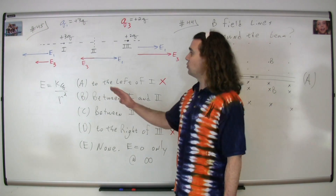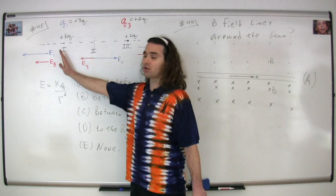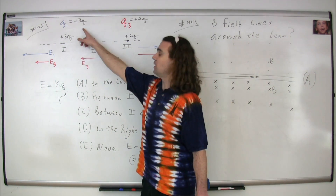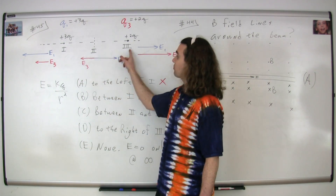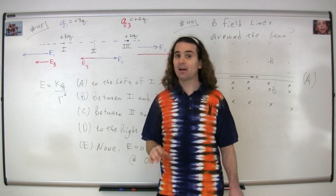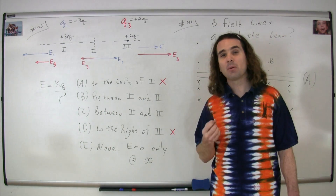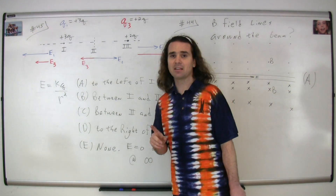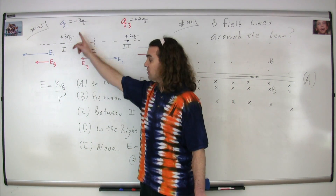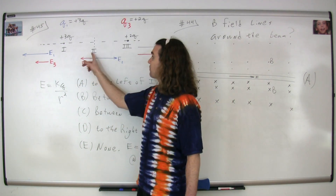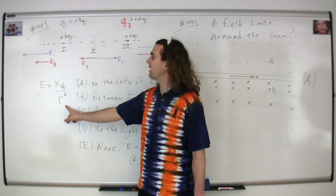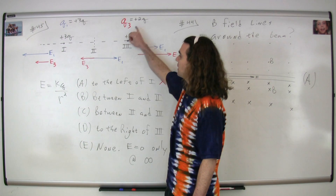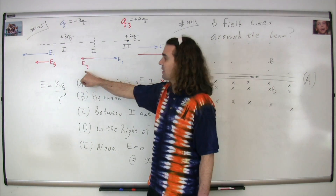Now we're going to look at point two, which is located directly between charges one and three. At this point, the electric field caused by charge one is to the right, and the electric field caused by charge three is to the left — they oppose each other. However, they don't have the same magnitude because they don't have the same charge. They have the same distance r from the midpoint, but Q is different. Because charge one is greater than charge three, electric field one is greater than electric field three.